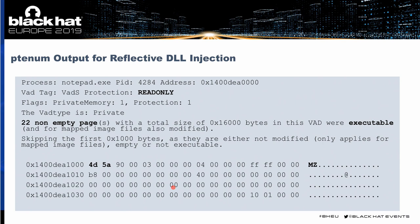Let's see another example. In this case we have the reflective DLL injection with our fork project, which initially allocates memory as read-only. We can see here it is read-only — at least the VAD states that. We have 22 non-empty pages which are executable in this case. We are skipping the first 0x1000 bytes because we left a little gap at the beginning, and then we can see right here our MZ magic bytes and the PE file that has been injected.